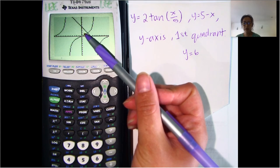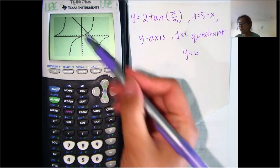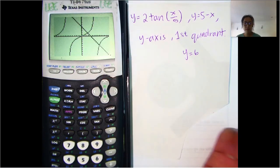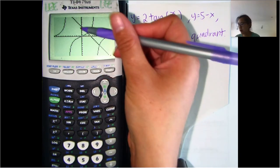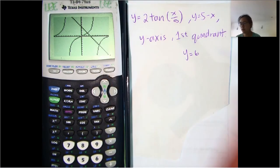What we're going to do is we're going to take that and we're going to revolve that around the Y equals 6 line. Okay, so this little area is what we're dealing with right now because we said in the first quadrant bounded by the Y axis and the tangent graph 2 tangent of X over 5 and then the Y equals 5 minus X.